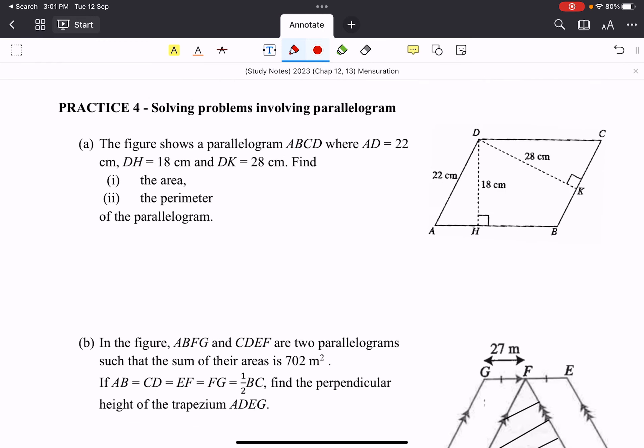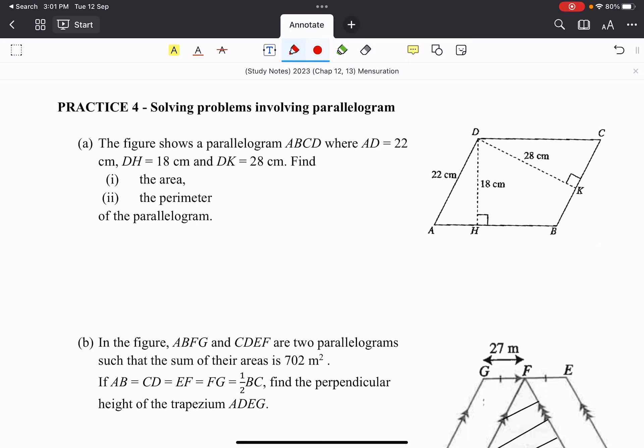So here's the first example. The figure shows a parallelogram ABCD. Then the various lengths are shown. So what they want us to do, first of all, is to find the area. We can do that. So the area equals the base times height. So in this case, the base and the height, the pair that we know is 22 cm for the base and for the height, we have 28 cm. So we work this one out. It is 616 cm².